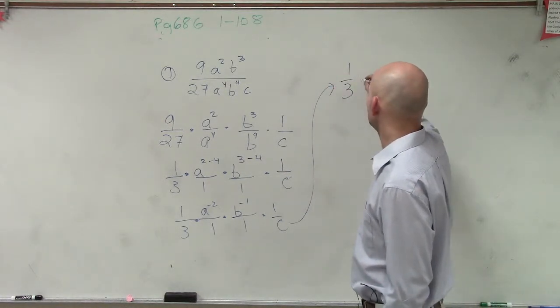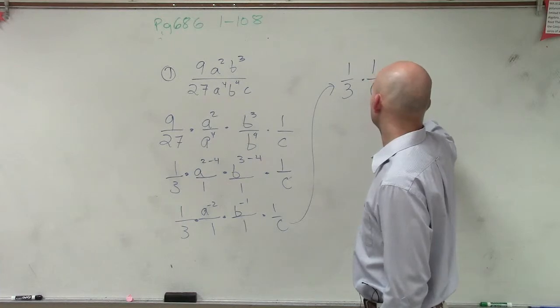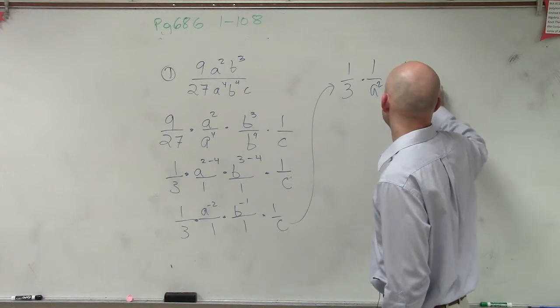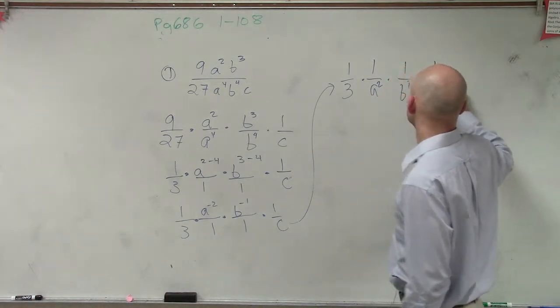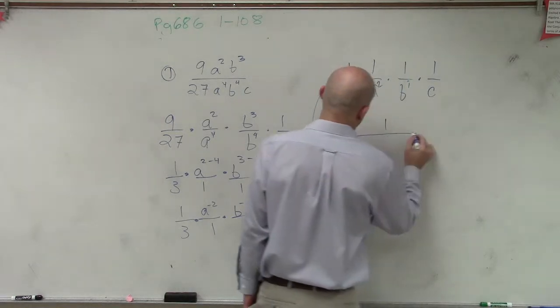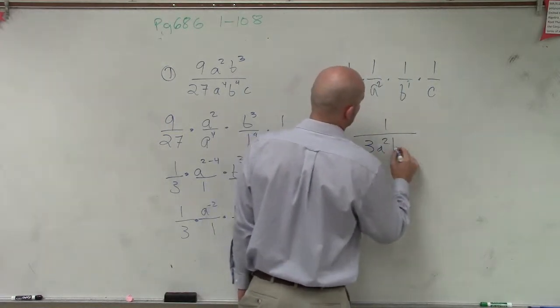So to continue this problem, I have 1 third times 1 over a squared times 1 over b to the first times 1 over c. And now I can just rewrite them as 1 over 3a squared bc.